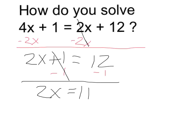So now I know that 2 times x is equal to 11. In order to get rid of the 2, I'm going to have to do the inverse of multiplication, which is, of course, division. I'm going to divide both sides by 2, and therefore x is equal to 11 divided by 2,